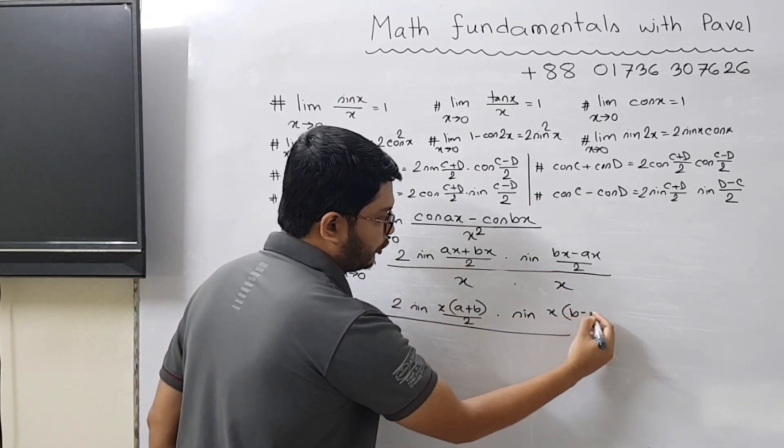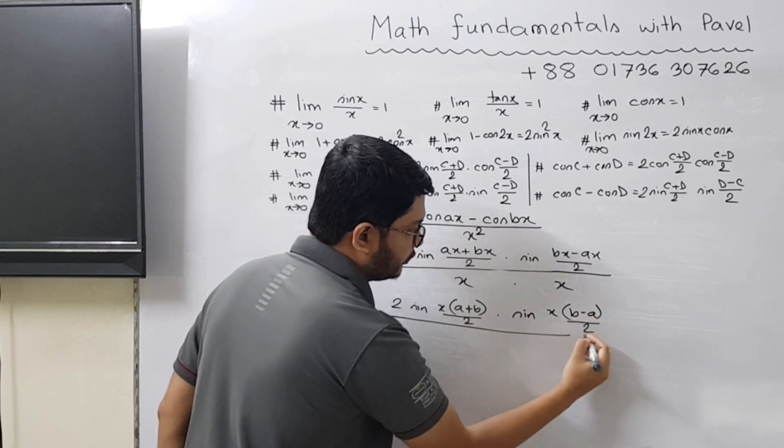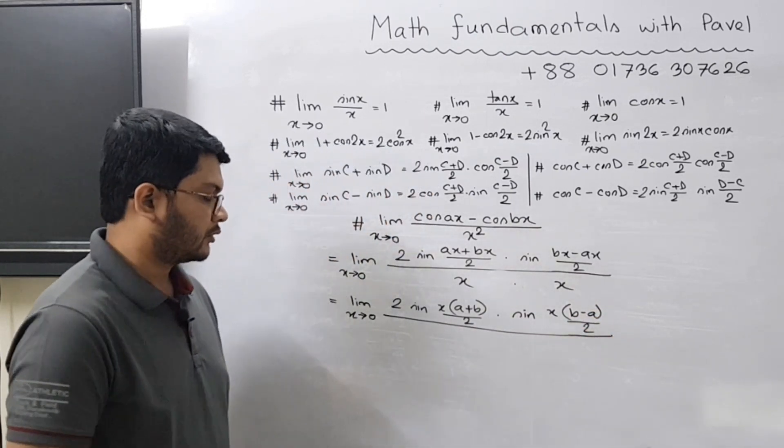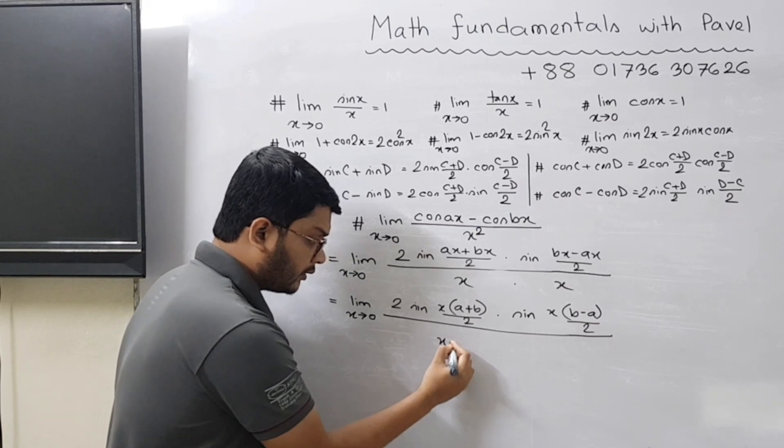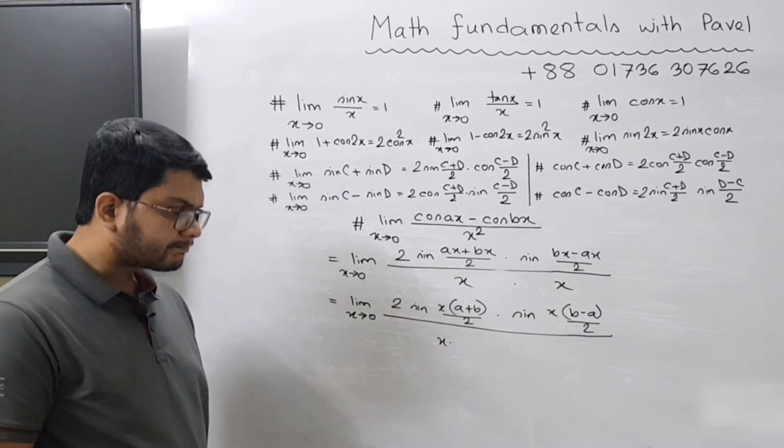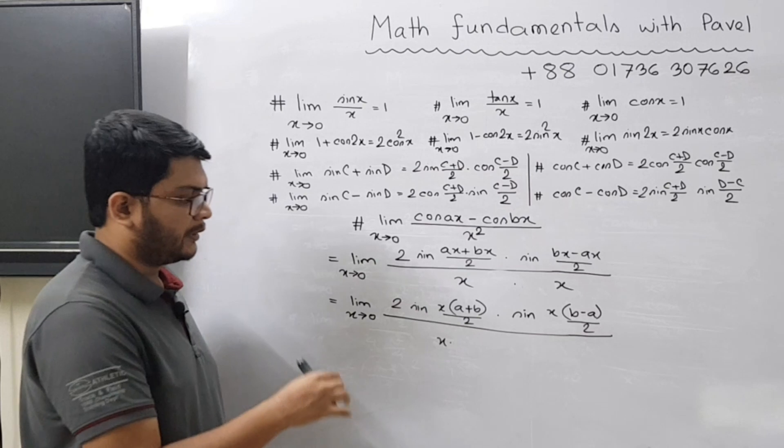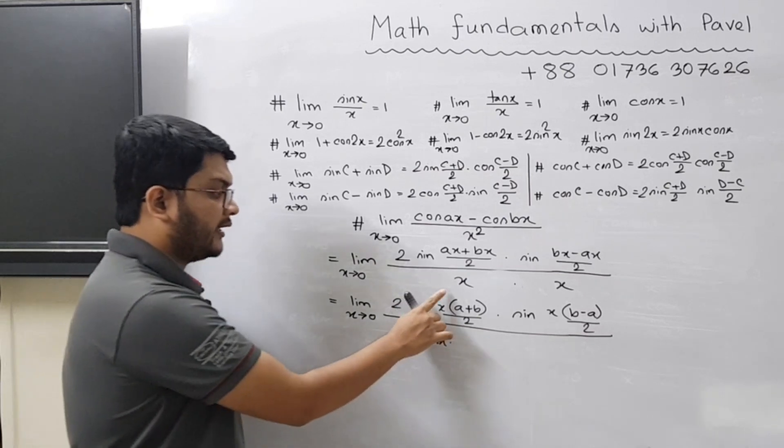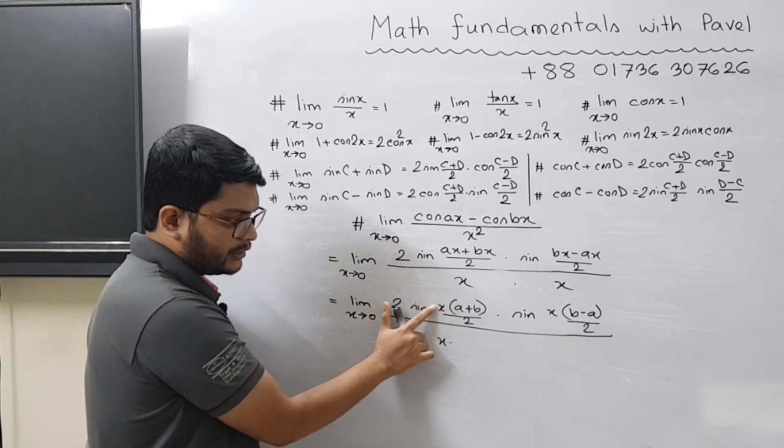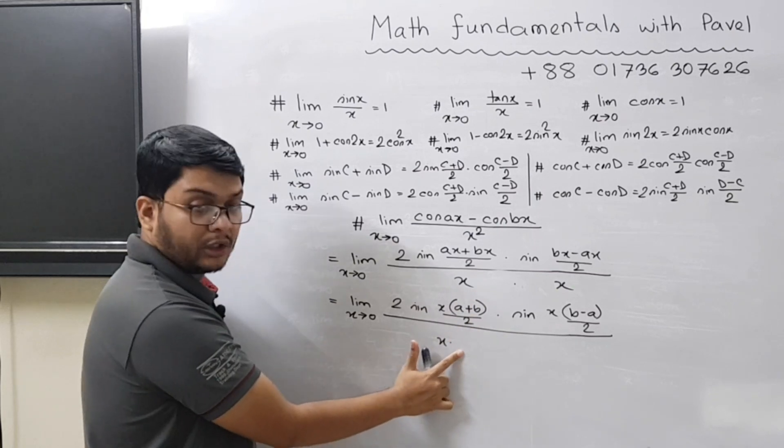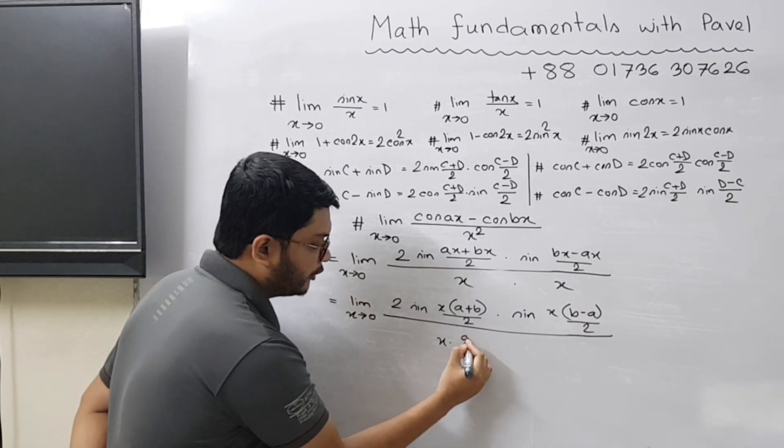You can also write x, and then it would be b minus a by two. So it will help you to just write down, I mean to adjust the theta.